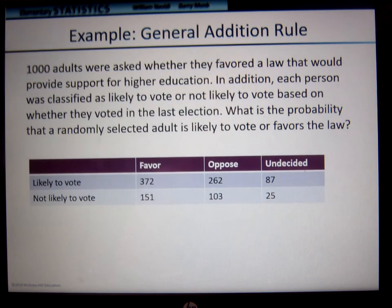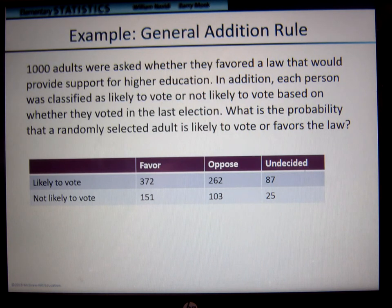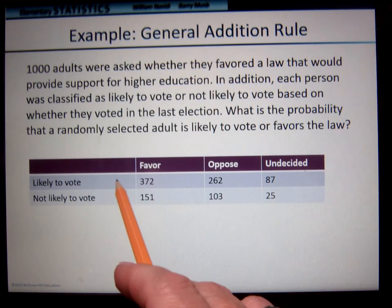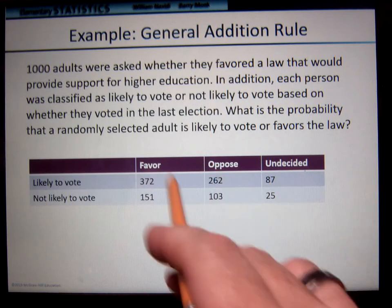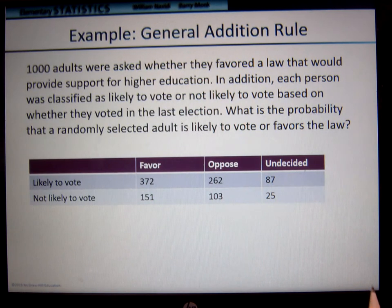So let's take a look. We have 1,000 adults who were asked whether they favored a law that would provide support for higher education. Each person was also classified as likely to vote or not likely to vote based on whether they had voted in the last election. What is the probability that a randomly selected adult is likely to vote or favors the law? We have likely to vote and we have favors the law — you can see there's an overlap here.